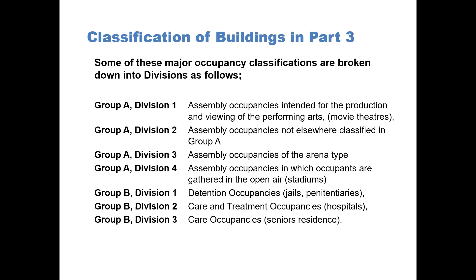Some of these major occupancy classifications are broken down into divisions as follows. Group A, Division I, is Assembly Occupancies intended for the production and viewing of the performing arts — movie theatres. Group A, Division II, is Assembly Occupancies not elsewhere classified in Group A. Group A, Division III, is Assembly Occupancies of the arena type. And Group A, Division IV, are Assembly Occupancies in which occupants are gathered in open air, like a stadium.